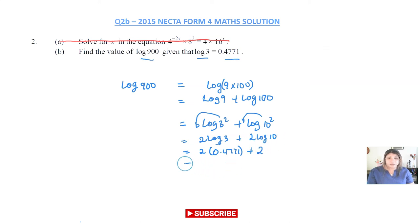So there's just 2 there. If you multiply this out, you get 0.9542. Then we add 2 and the final answer is 2.9542.